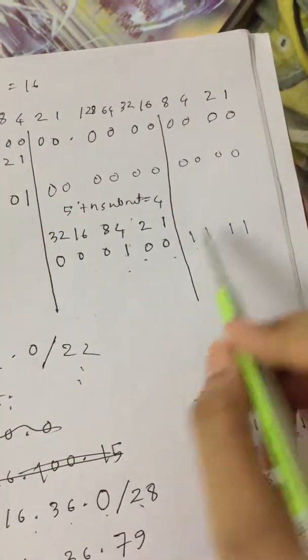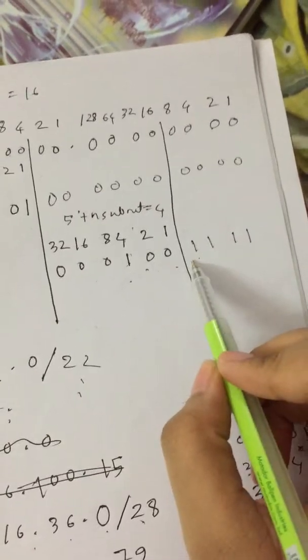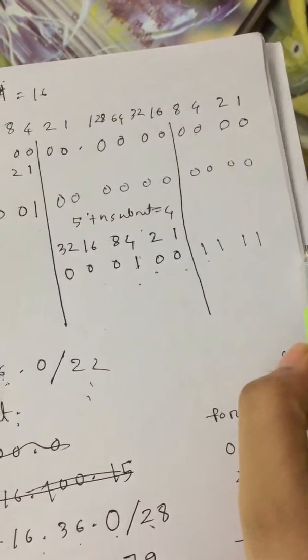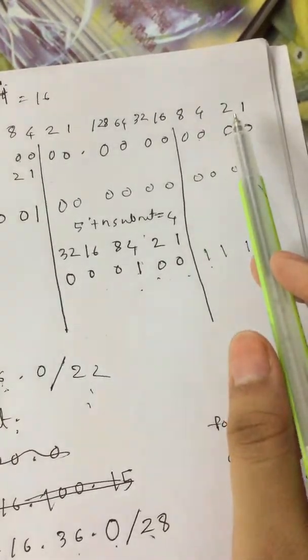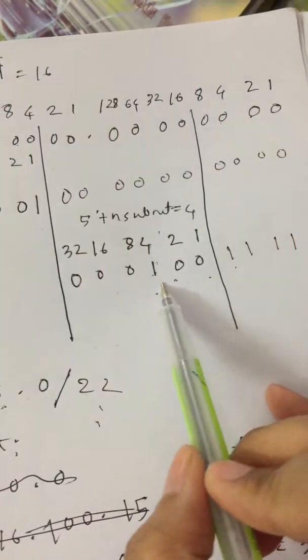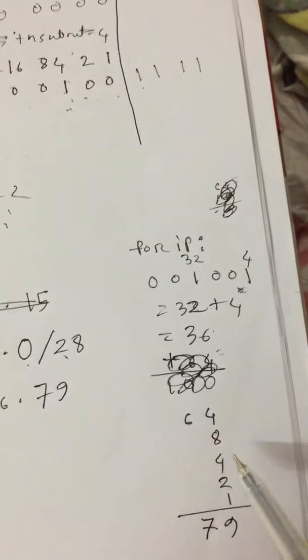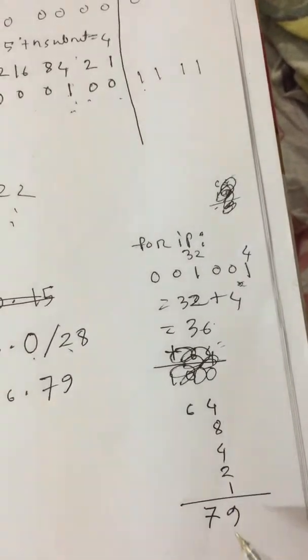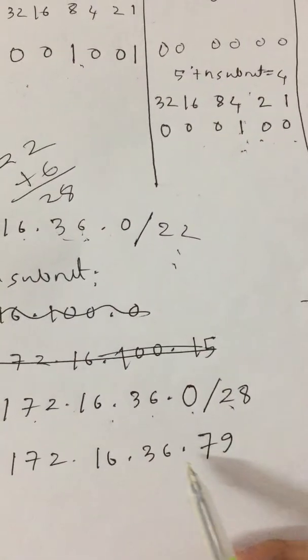We will add 22 plus 6, so it becomes 28. Now for broadcast address, what we have to do is we have to make this part all ones—1, 1, 1, 1, 1.